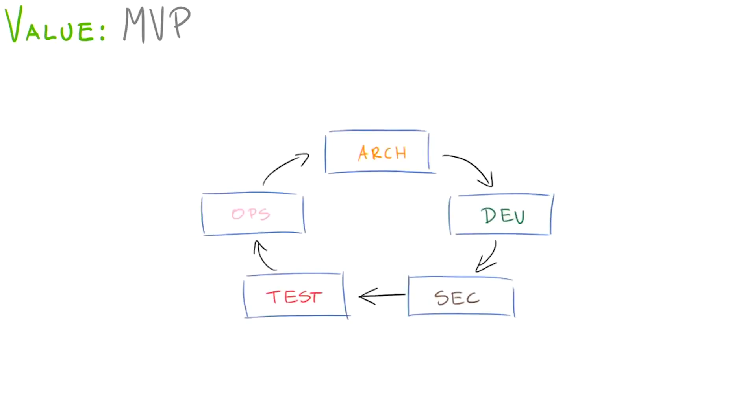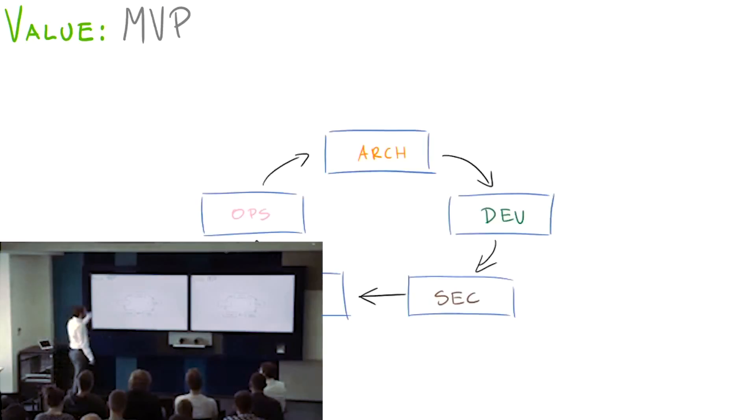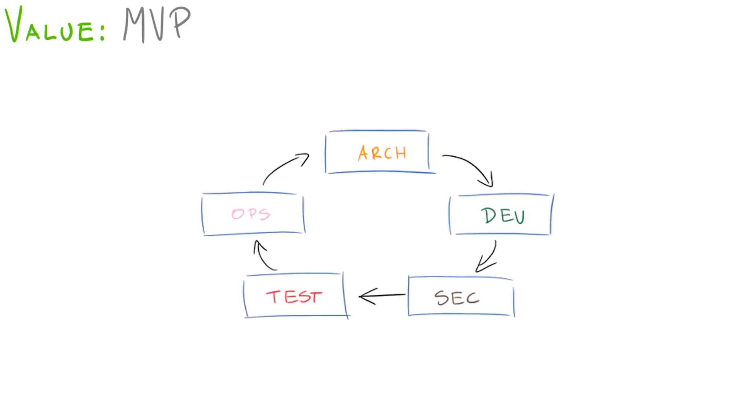How does the MVP methodology add to this? MVP teaches us that the most important thing is customer feedback. Based on this feedback, we need to make further decisions to develop our product. This becomes a cycle, a loop. You architect something, develop it, make it secure, test it, put it in production, reach out to customer for feedback. Based on the feedback, you start the next cycle.